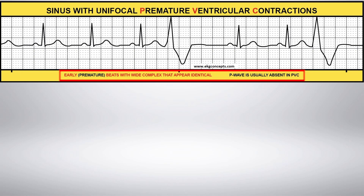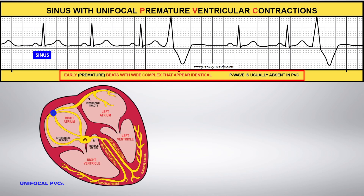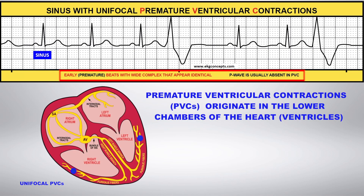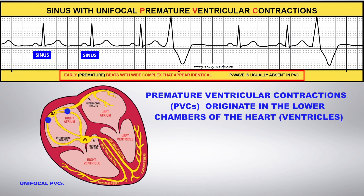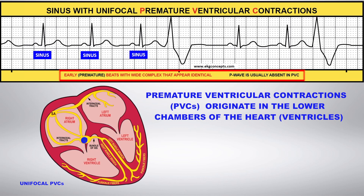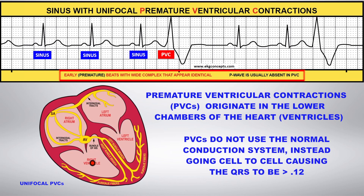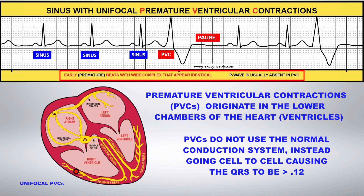Unifocal PVCs originate from one irritable ventricular focus in either the right or the left ventricle and appear identical. Usually a PVC is followed by a compensatory pause.